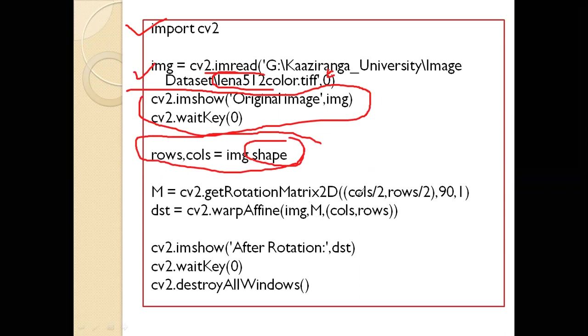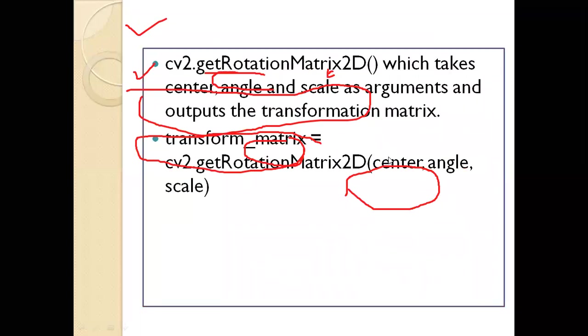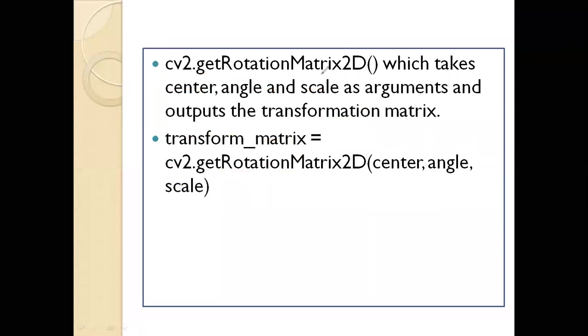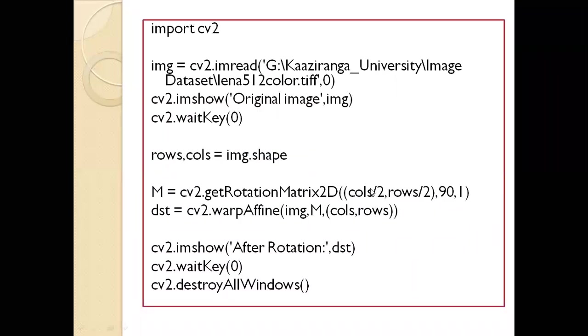Then M equals cv2.getRotationMatrix2D with cols/2, rows/2. Just recall the syntax - the first parameter is center, then angle, and scale. So now we're using the center as cols/2, rows/2, 90 degrees for the angle, and 1 for scale.